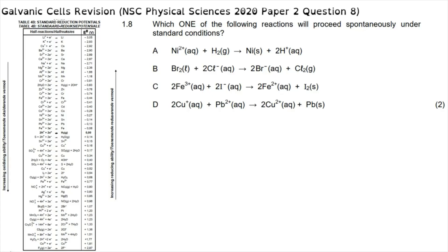The Galvanic Cells section of the chemistry paper starts with question 1.8 in multiple choice, which reads: which one of the following reactions will proceed spontaneously under standard conditions? Using Table 4b of standard reduction potentials, the way to identify a spontaneous reaction is by finding a reaction where the oxidation half reaction occurs above the reduction half reaction on this table — so a substance is oxidized, then we move down the table to find something that is reduced.